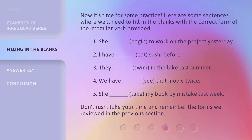4. We have (blank / see) that movie twice. 5. She (blank / take) my book by mistake last week. Don't rush — take your time and remember the forms we reviewed in the previous section.